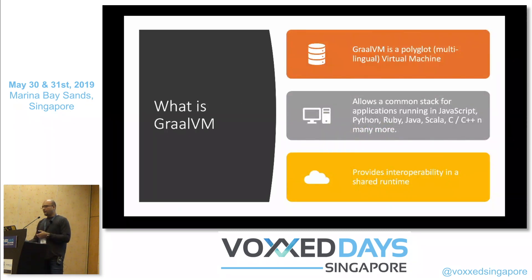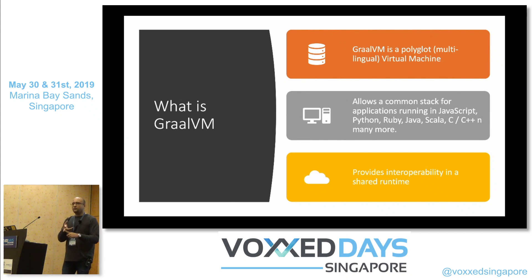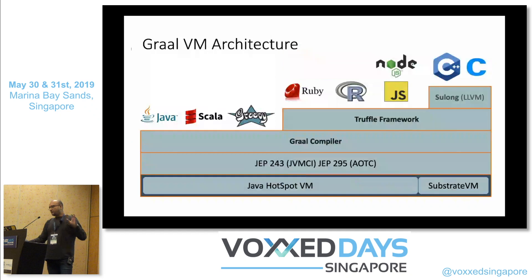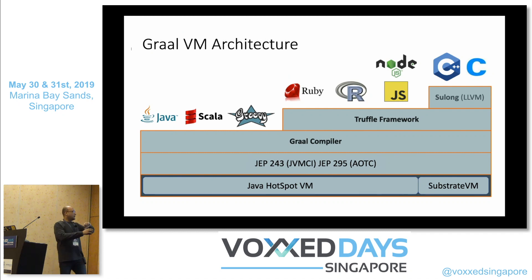What is GraalVM? GraalVM is a polyglot, multilingual virtual machine. It provides a common stack for applications running in Java, Python, R, Node.js, C++, and many more. Having this common stack enables it to provide interoperability in a shared runtime. Looking at a holistic picture, you can see the languages supported, the stack, and the components. Let's take it one component at a time, starting from the heart: the Graal compiler.